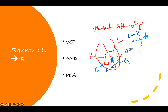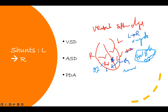For ventricular septal defect specifically, patients are acyanotic and don't have symptoms at birth. Something specific about VSD that they like to ask is what kind of murmur you hear. The classic murmur for ventricular septal defect is a harsh murmur. You hear a harsh murmur whenever a patient has ventricular septal defect.